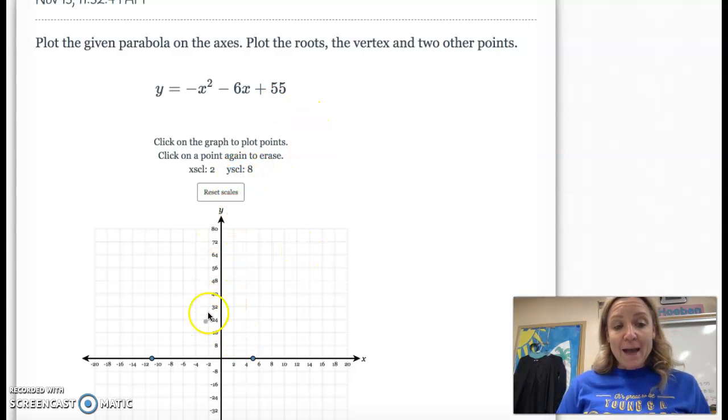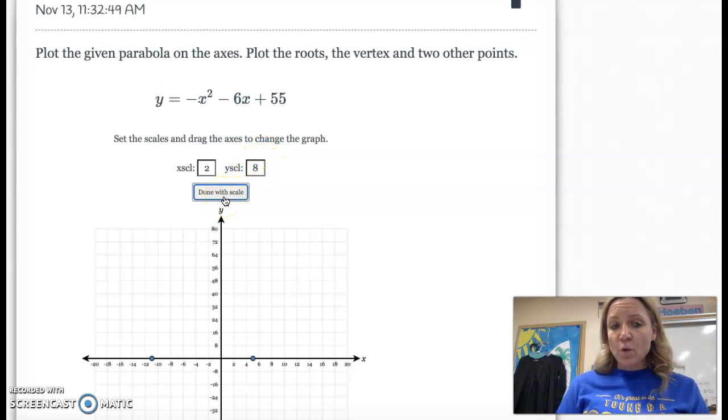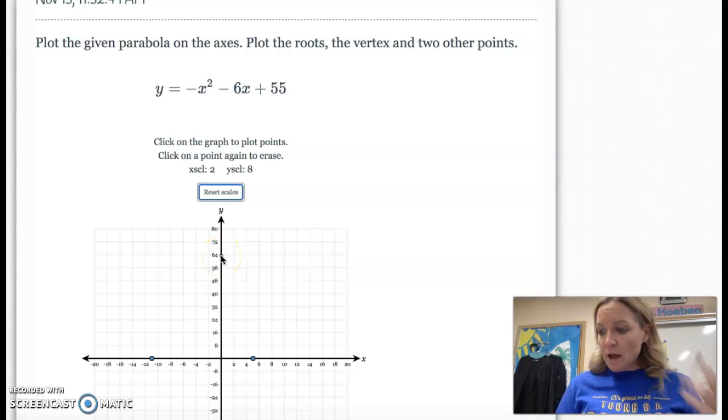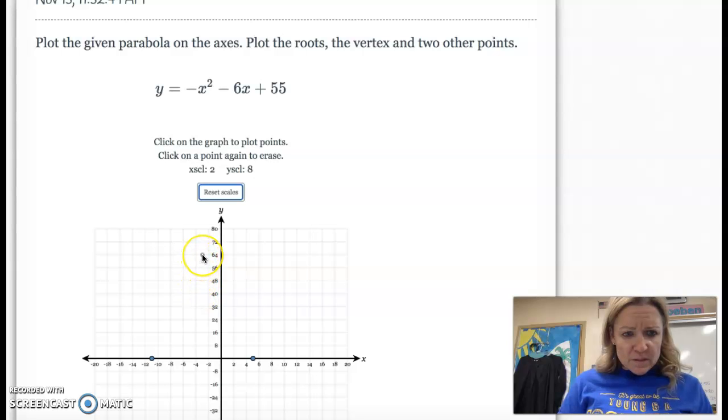But if your y-axis is at a scale of one, you're not going to have enough space to put it on there. So I tried different scales and you can just reset it. You can try different numbers until you find one that works for you. I settled on eight because 64 is exactly right here. So I was able to say, okay, I have a point that's exactly where I want it to be. So negative three and then go up to 64 and there's the vertex.